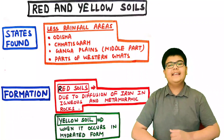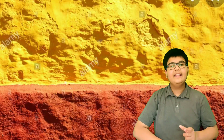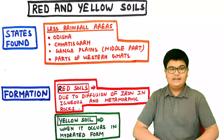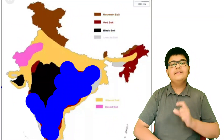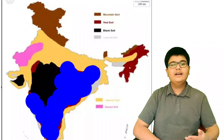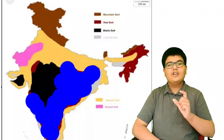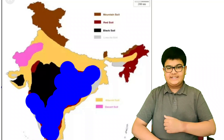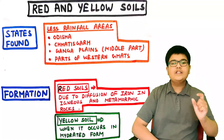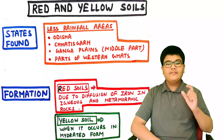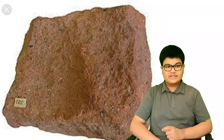Red and yellow soils are red and yellow in color. They are found in less rainfall areas such as Odisha, Chhattisgarh, the middle part of the Ganga Plain, and parts of the Western Ghats. Red soils are formed due to the diffusion of iron in igneous and metamorphic rocks.